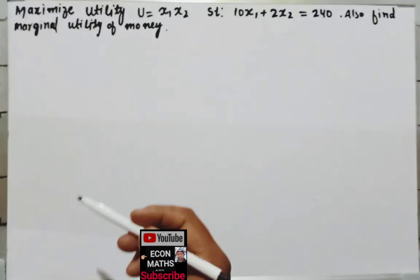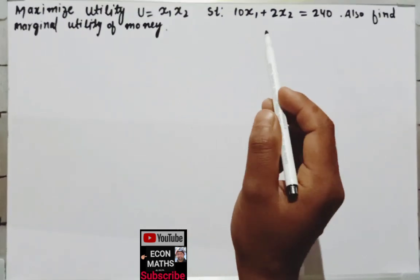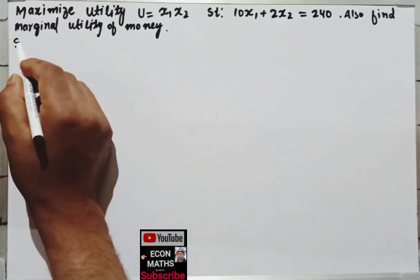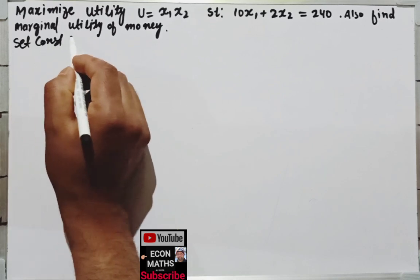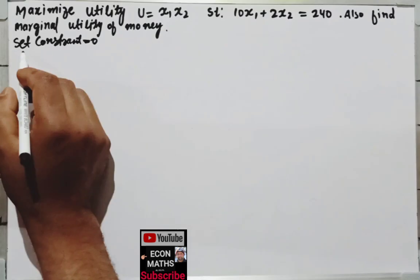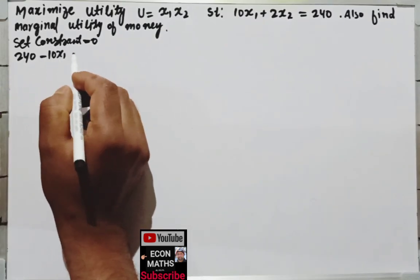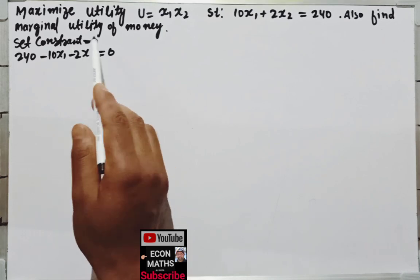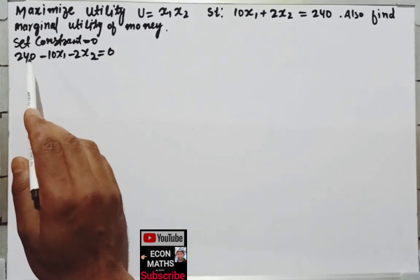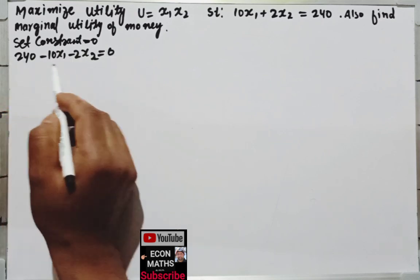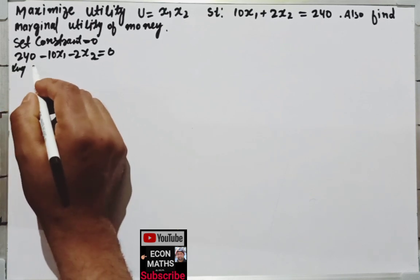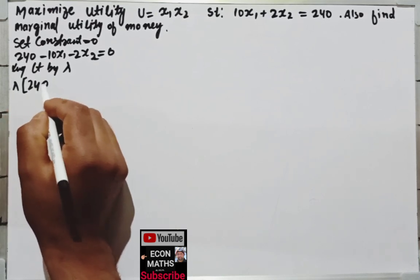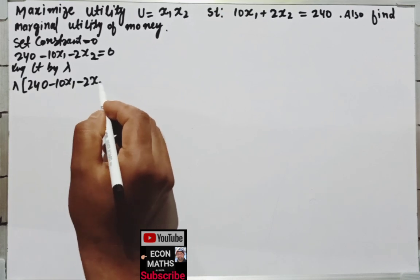Now we have to maximize this. First of all, as we have seen in earlier videos, we will set the constraint equal to 0. This means 240 minus 10x1 minus 2x2 is equal to 0. The second step is to multiply this constraint by lambda.